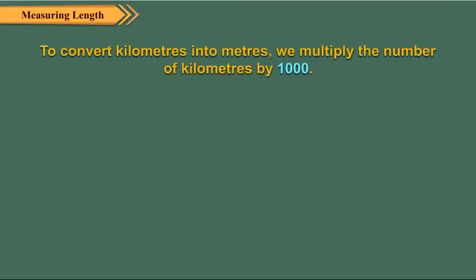Similarly, to convert kilometers into meters, we multiply the number of kilometers by 1000. Let us convert 5 kilometers into meters.